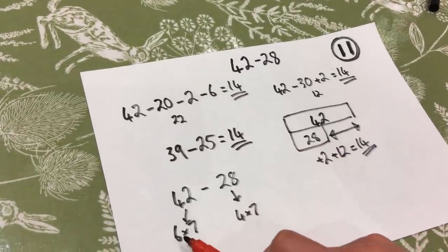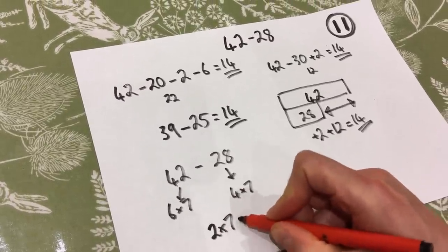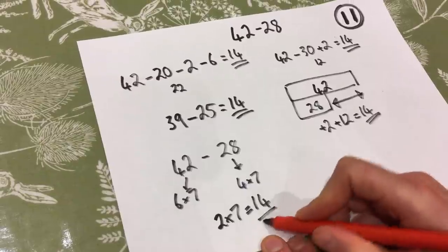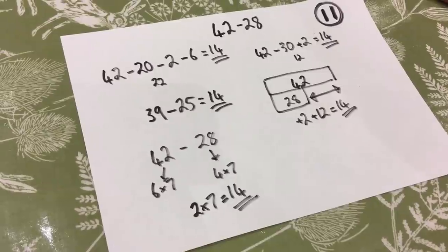So the difference between six lots of seven and four lots of seven, of course, is two lots of seven. And it is, of course, 14. Lots of different strategies, lots of chance for creativity too.